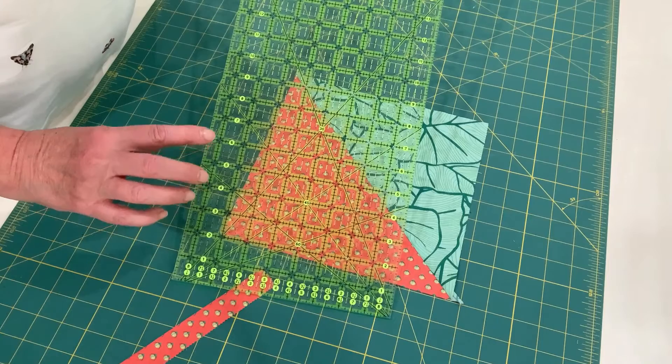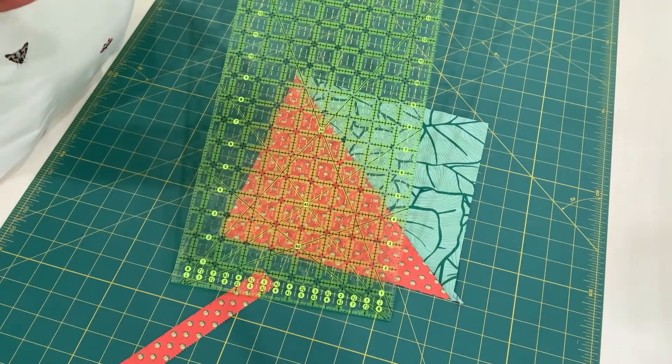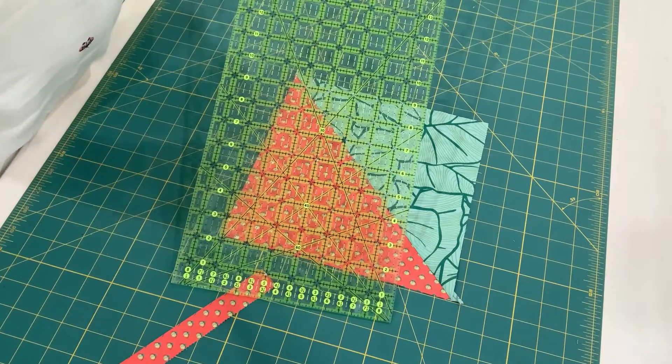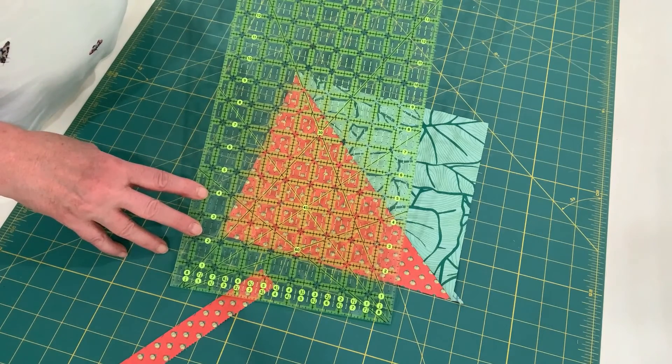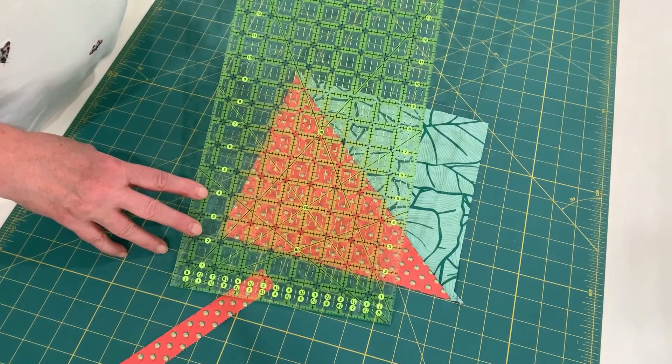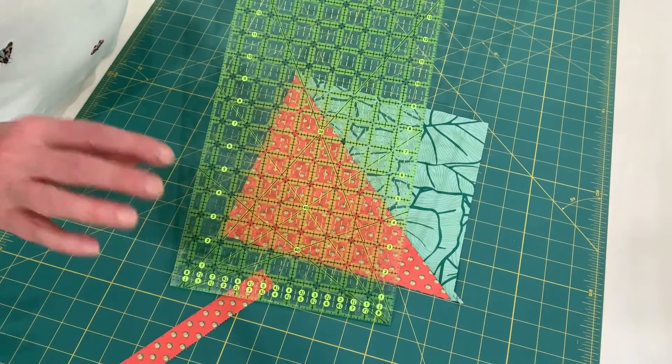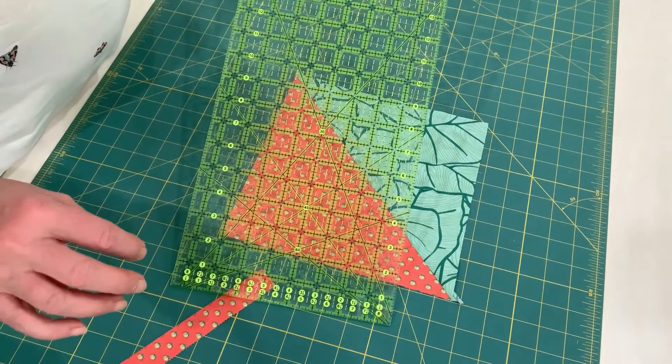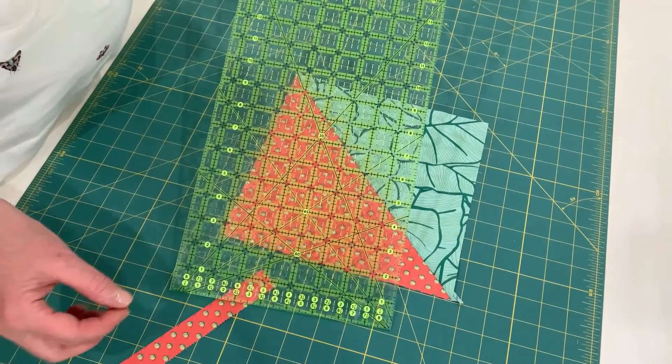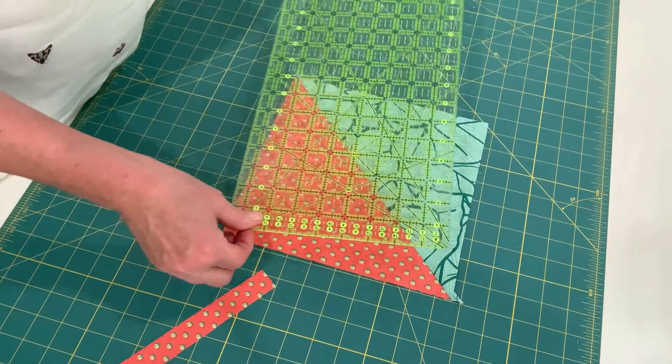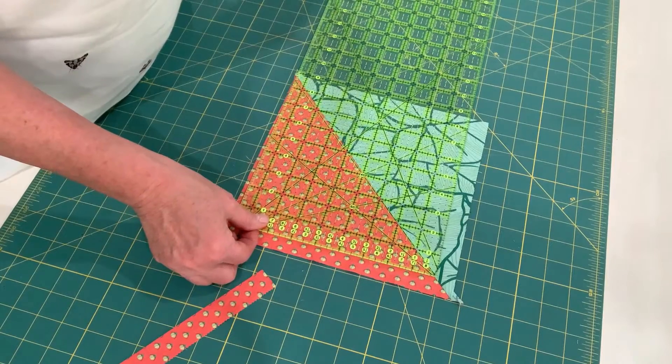So the largest triangle square block that you can trim with an 8 1⁄2 inch wide ruler is an 8 1⁄2 inch block. Or you can choose anything smaller than that, but the most it can be is 8 1⁄2 inches.